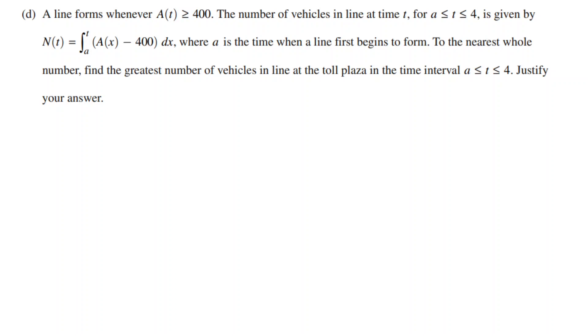To the nearest whole number, find the greatest number of vehicles in line at the toll plaza in the time interval a less than or equal to t less than or equal to 4. Justify your answer.